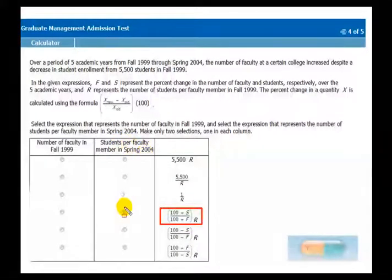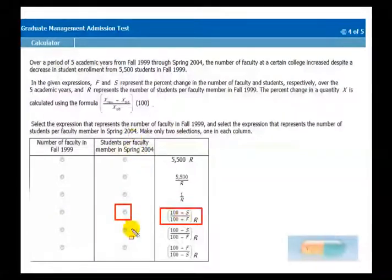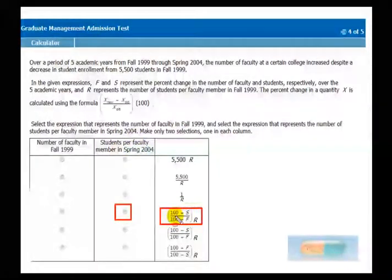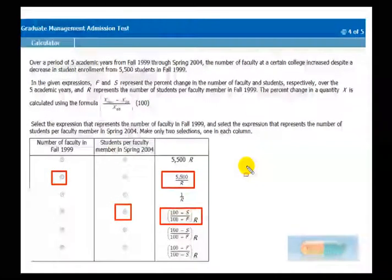So this is what we want, and so for students per faculty in 04, you mark this one. So again, your final answer for this one is this expression right here, and for the original one, it was this expression. So there you go, mark it as your final answer, and move on.